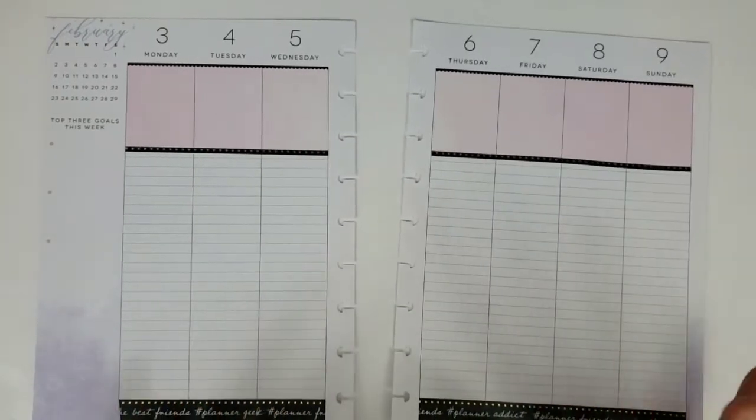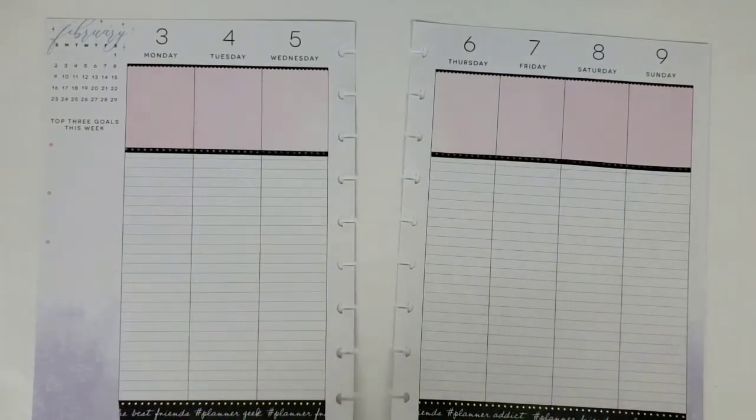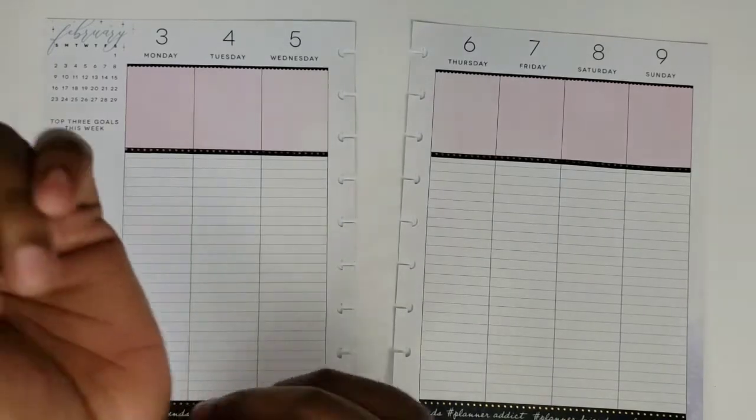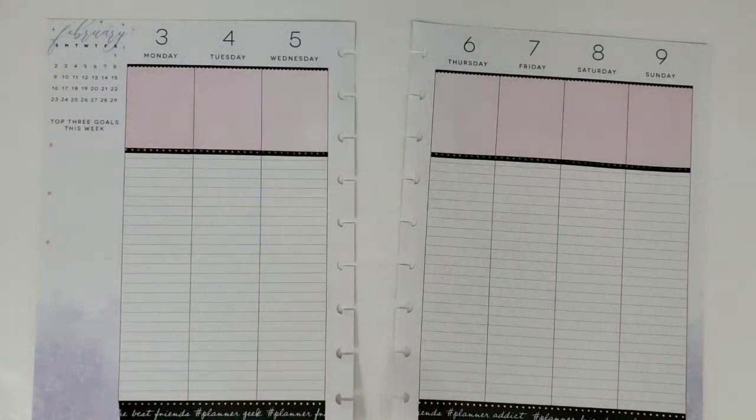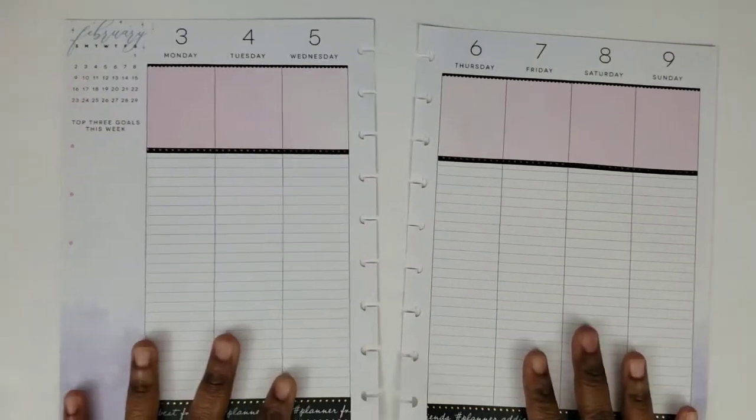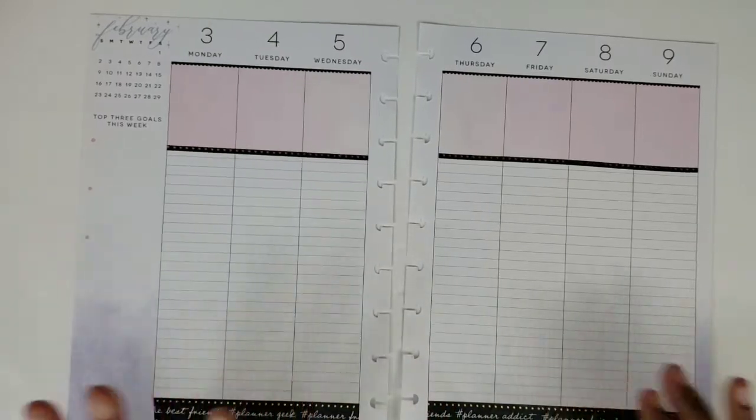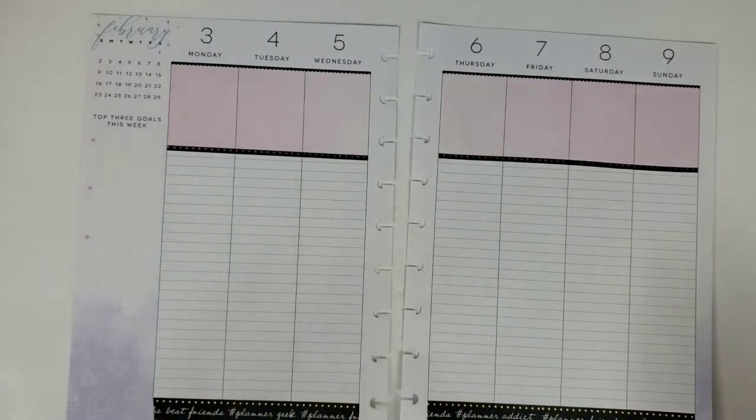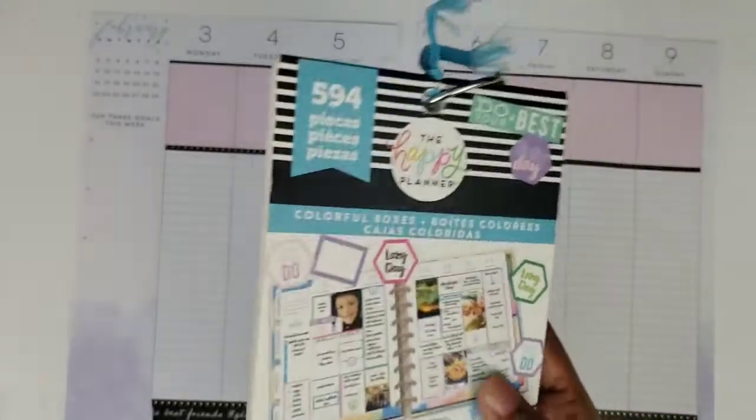Hi, this is Tamika with Tasty Spoons of Pie and I'm here with a plan with me video in my social media planner for the week of February 3rd through the 9th. Let me put these braids out of the way so they won't be flying everywhere. So I've decided to do black and gold kind of thing and I'm using some colorful boxes.